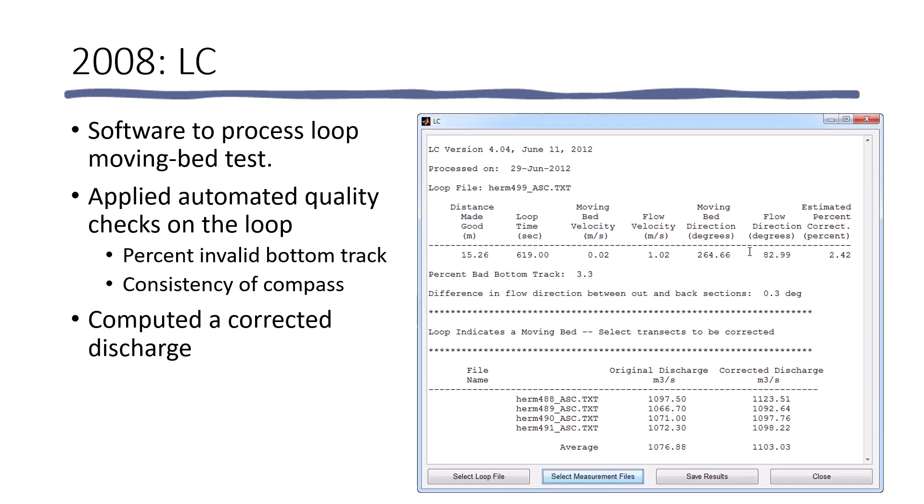Likewise, following on to that, we created LC, which is software to process a loop moving bed test. And this software provided some automated quality checks on the loop, like looking at the percent of invalid bottom track data and the consistency of the compass. And just like SMBA, if there was a moving bed, it would automatically compute a corrected discharge.